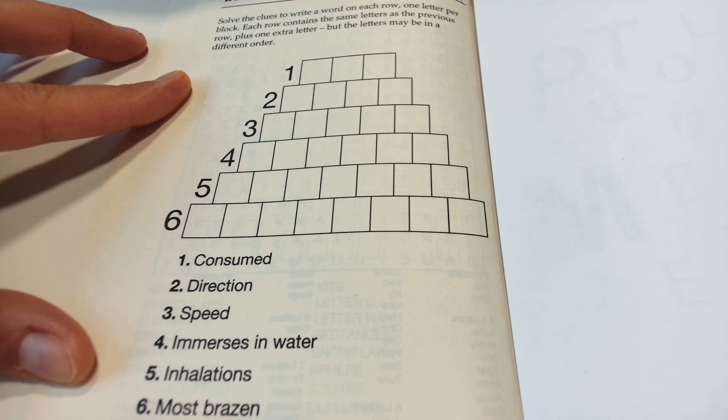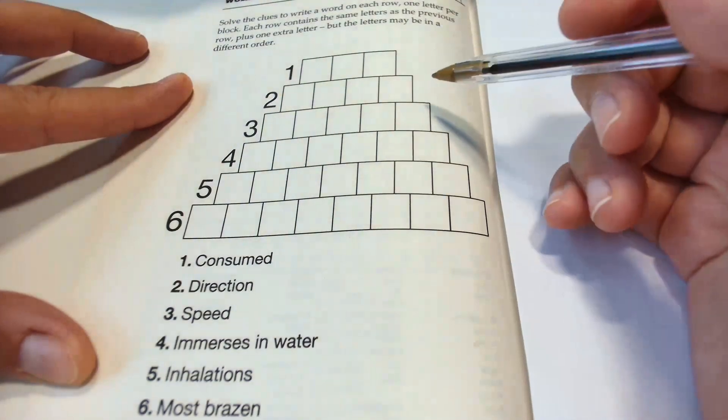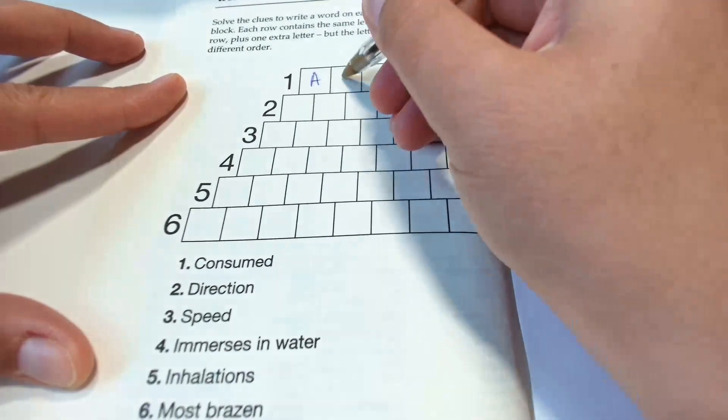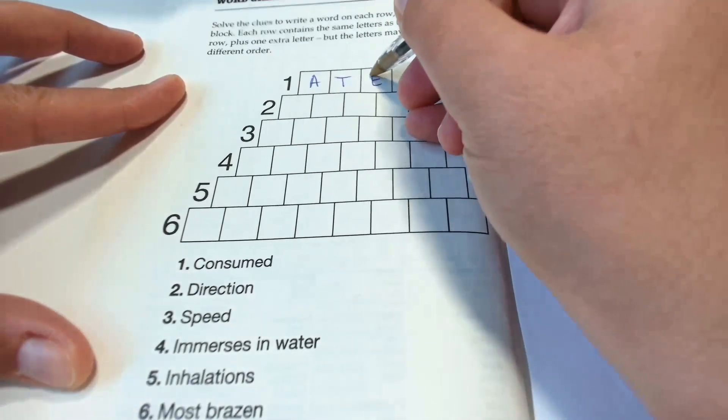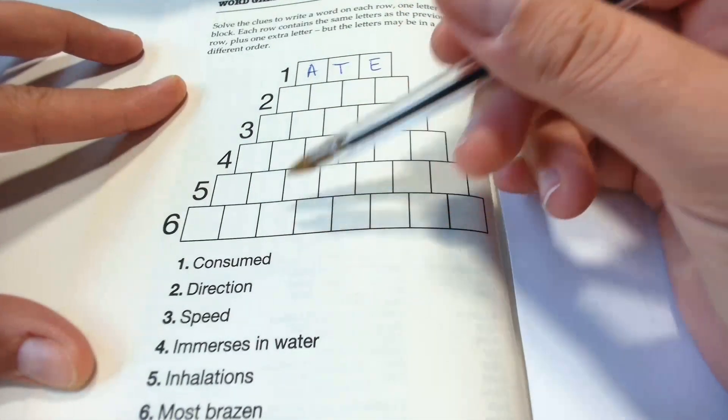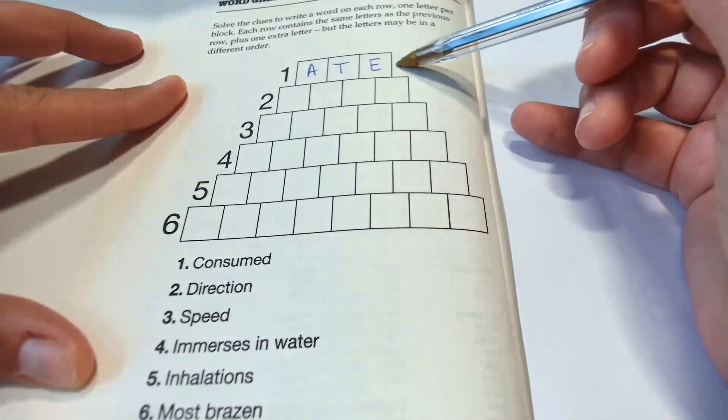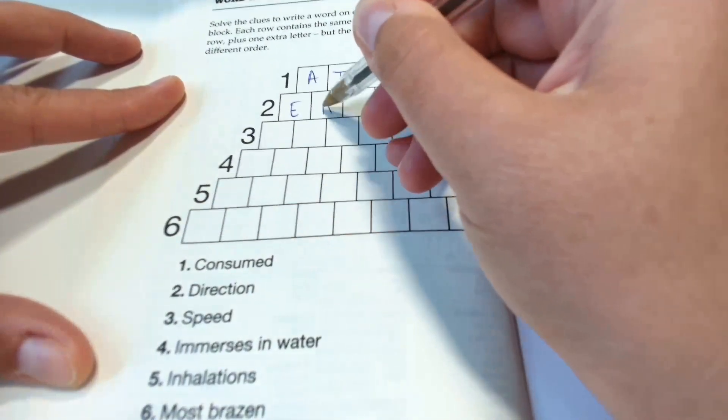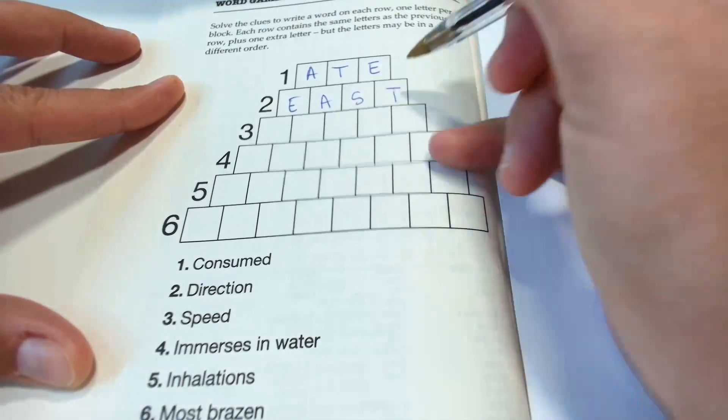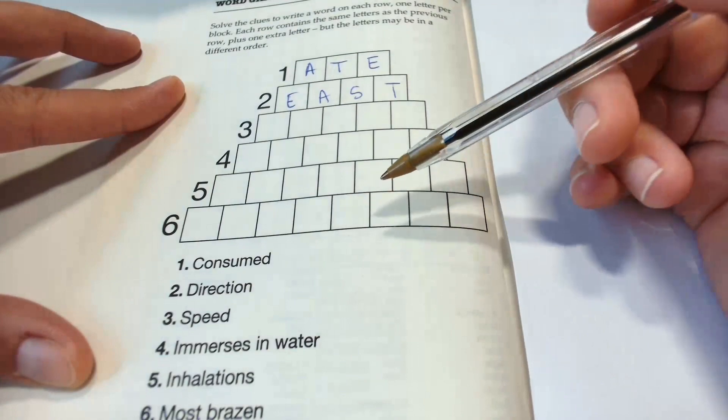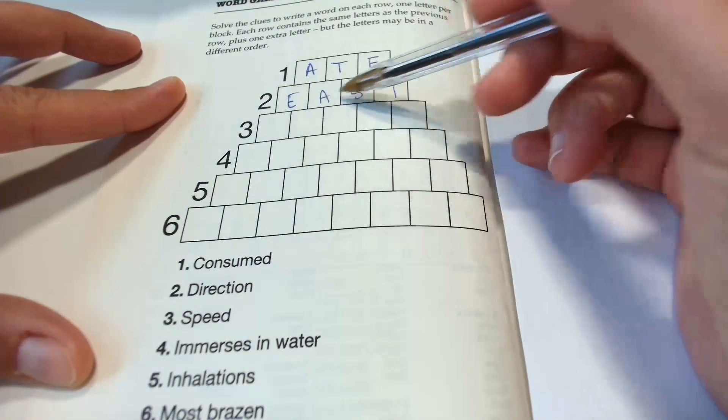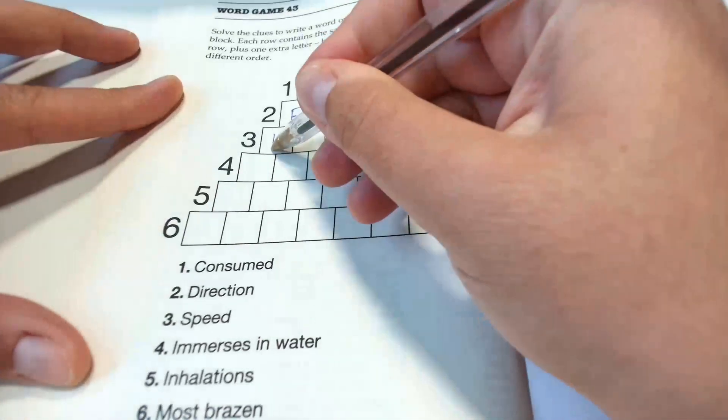Solve it together. Are you ready? The first word, consumed: ate. Direction, using these letters above and only one extra: east. Speed: it's haste, so we have the previous letters and one extra. Haste. Number four, immerses in water: bathe.